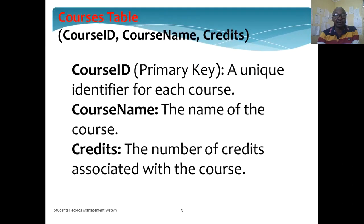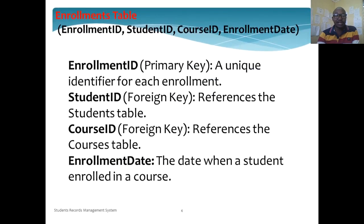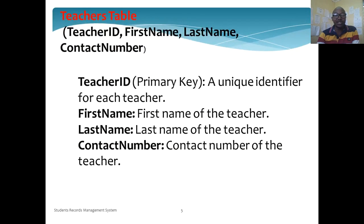Then we shall have the courses table where we shall have the course ID as the primary key, course name and credits. Then we shall have the enrollment table where we shall have the enrollment ID as the primary key, student ID as the foreign key, course ID as the foreign key, and also the enrollment date.